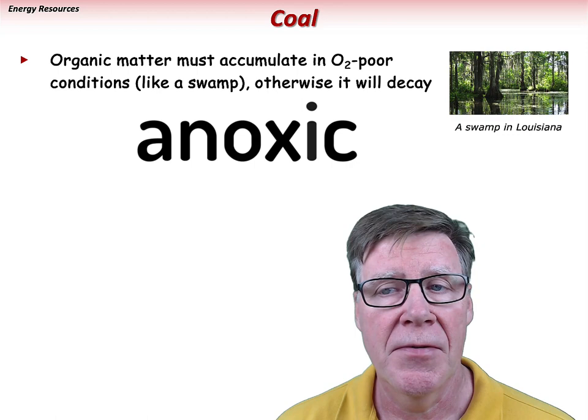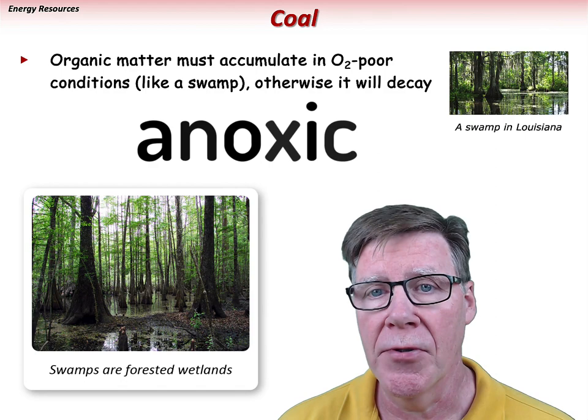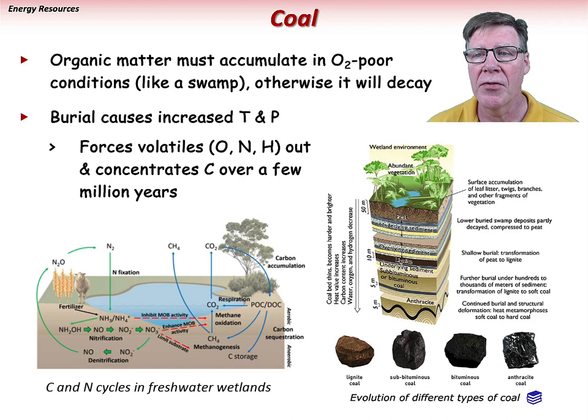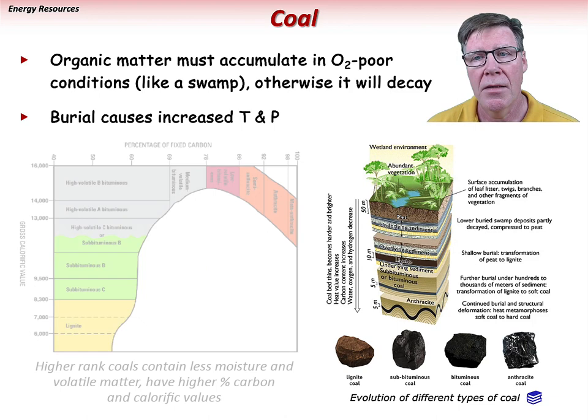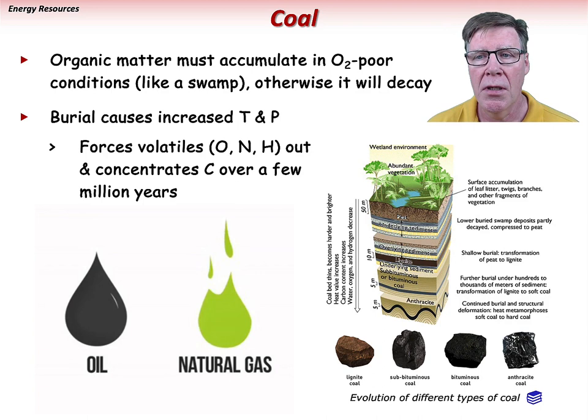Let's first look at the fossil fuel coal. In the formation of coal, organic matter must accumulate in oxygen-poor or anoxic conditions, like a swamp; otherwise it will decay and lose its value as an energy source. Burial causes temperature and pressure to increase, forcing out volatiles like oxygen, nitrogen, and hydrogen, and concentrating the carbon. Different stages of this process produce different types of coal, and hydrocarbons too, like oil and natural gas. This distillation process takes thousands or even millions of years, and eventually a relatively thin coal seam is the result.